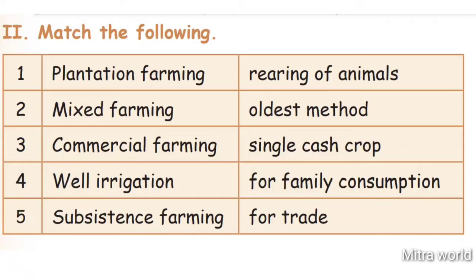Answers: Plantation farming matches with Single cash crop. Mixed farming matches with Rearing of animals. Commercial farming matches with For trade. Well irrigation matches with Oldest method. Subsistence farming matches with Family consumption. Check your answers.